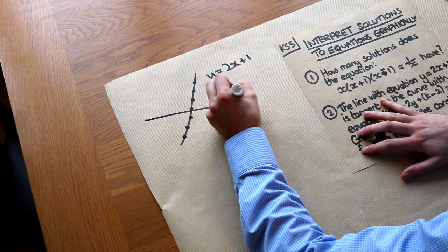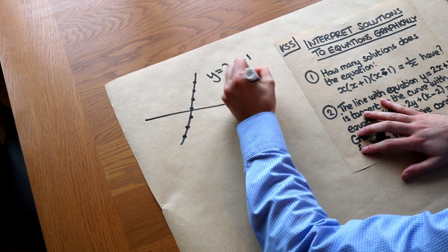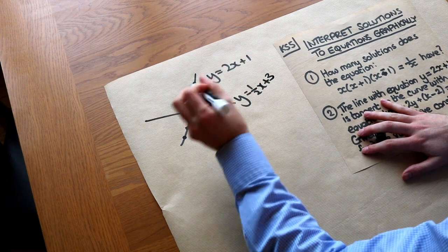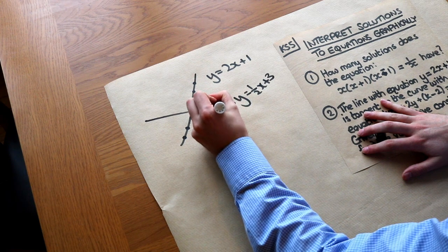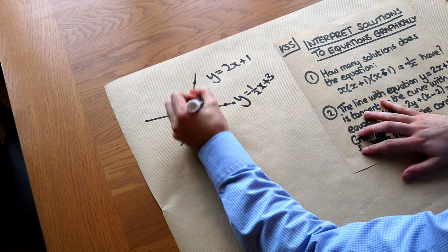And then I might have another line, y equals half x plus 3. And that line also consists of points which all satisfy this particular equation.